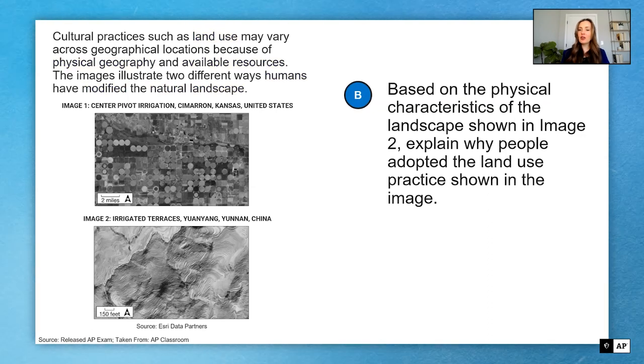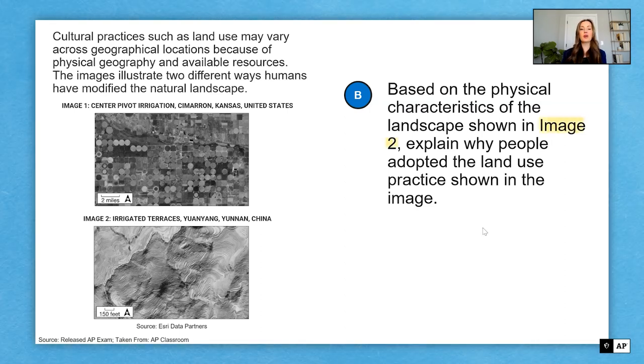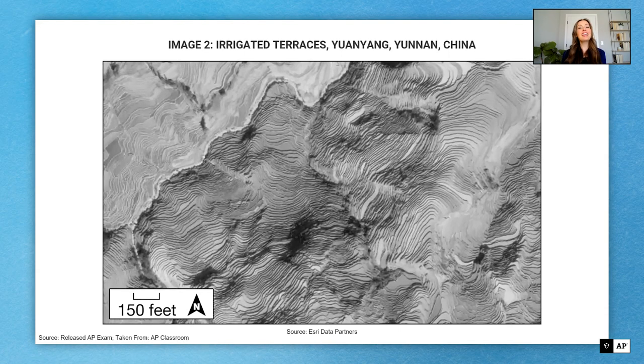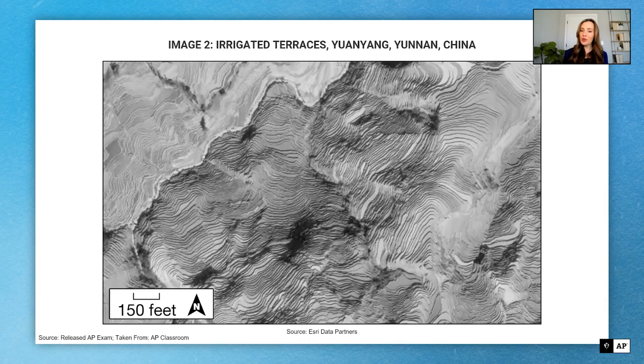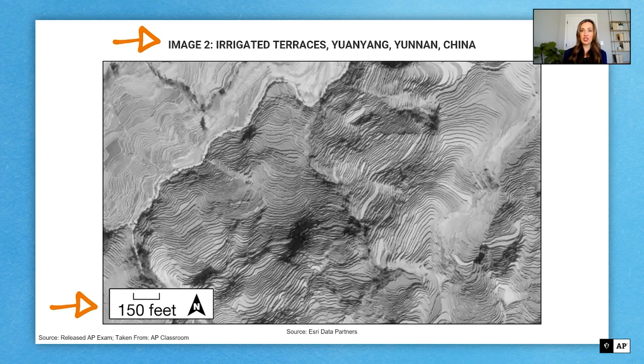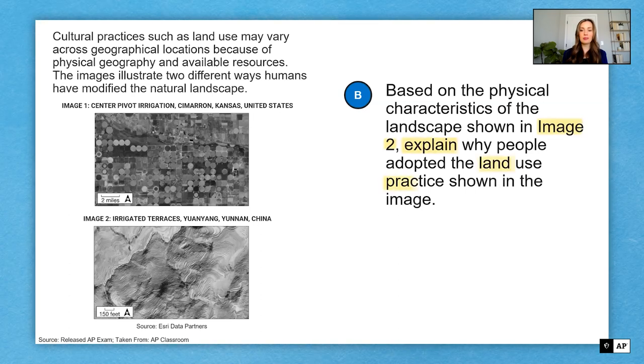So it says here, based on the physical characteristics of the landscape shown in image two, explain why people adopted the land use practice shown in the image. So this question wants me to focus on image two, and it wants me to explain why people adopted the land use practice shown in the image. So I zoom in here, and I notice that image two shows me irrigated terraces. Now, if I wasn't paying attention and I didn't read the title, I might not notice that the type of land use here is irrigated terraces. I could have missed that key, but I didn't miss it because I took time to read the title, and I also took some time to look at the legend here, the scale of the map, to show me how much land I'm looking at.